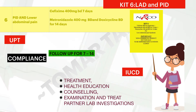The drugs used in Kit 6 are: ofloxacin 400 mg twice daily for two weeks, metronidazole 400 mg twice daily for two weeks, and doxycycline 100 mg twice daily for two weeks. The patient is asked to return after three days of starting the drugs.